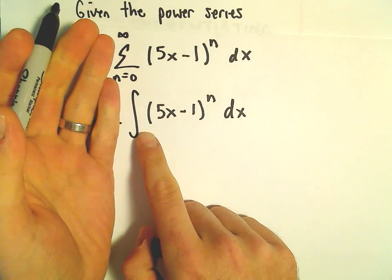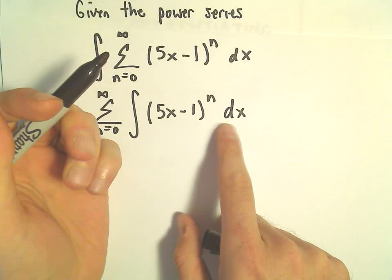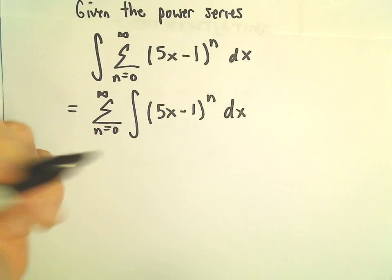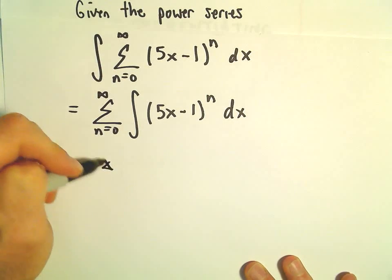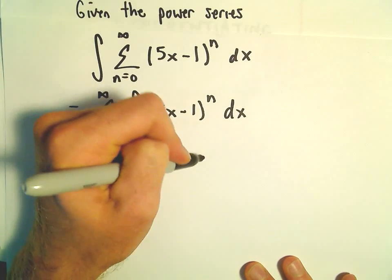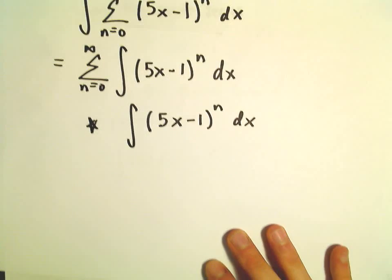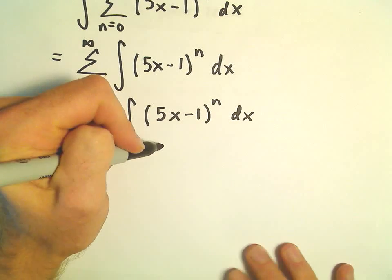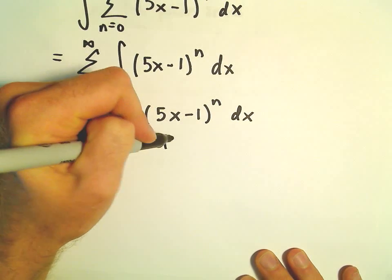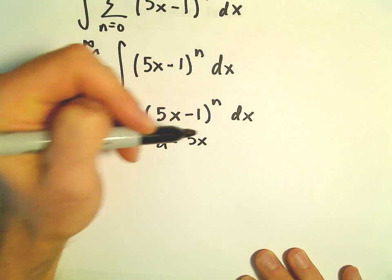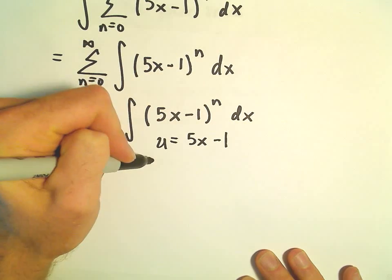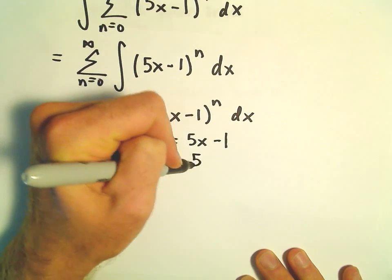Well, if we want to integrate 5x minus 1 to the n power, some generic power, with respect to x, really, so maybe just kind of off to the side. What I would do in this case is just do a little u substitution, so if u equals 5x minus 1, du would be 5 dx.